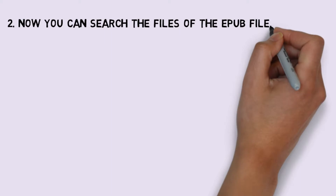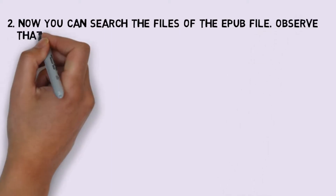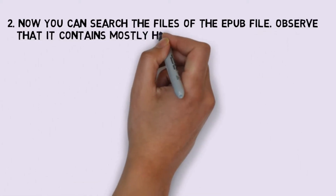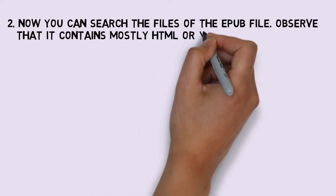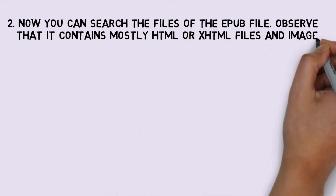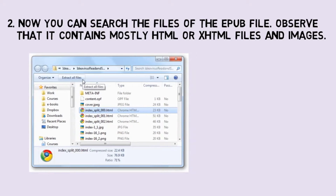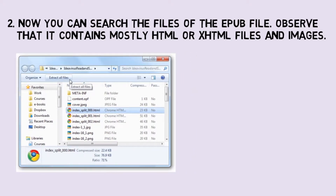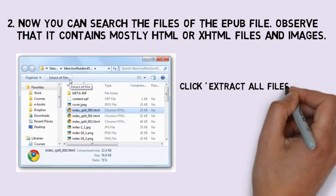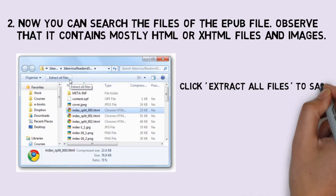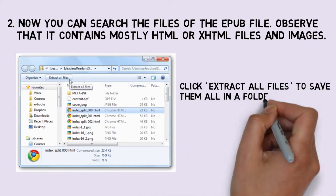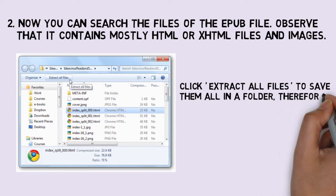Step 2: Now you can browse the files of the EPUB file. Observe that it contains mostly HTML or XHTML files and images. Click 'extract all files' to save them all in a folder so you can easily edit them.